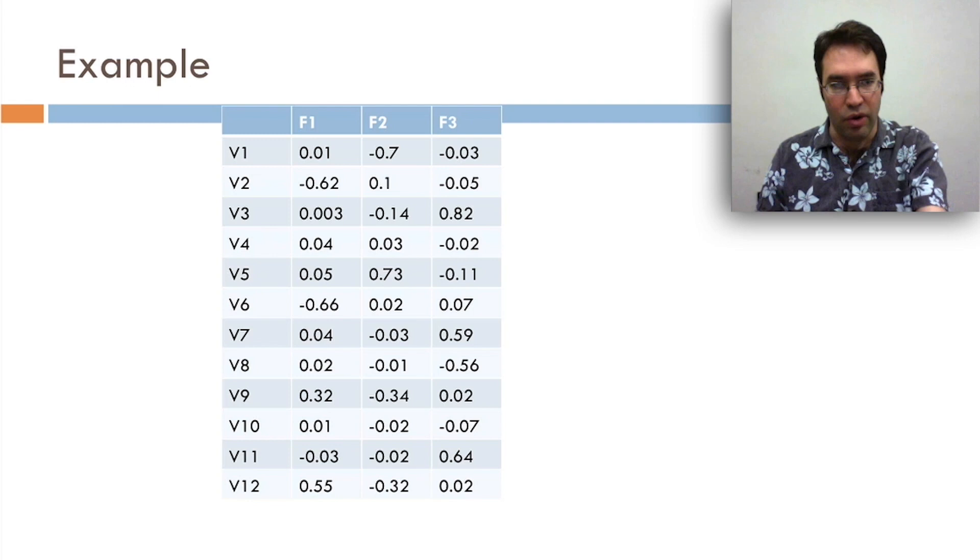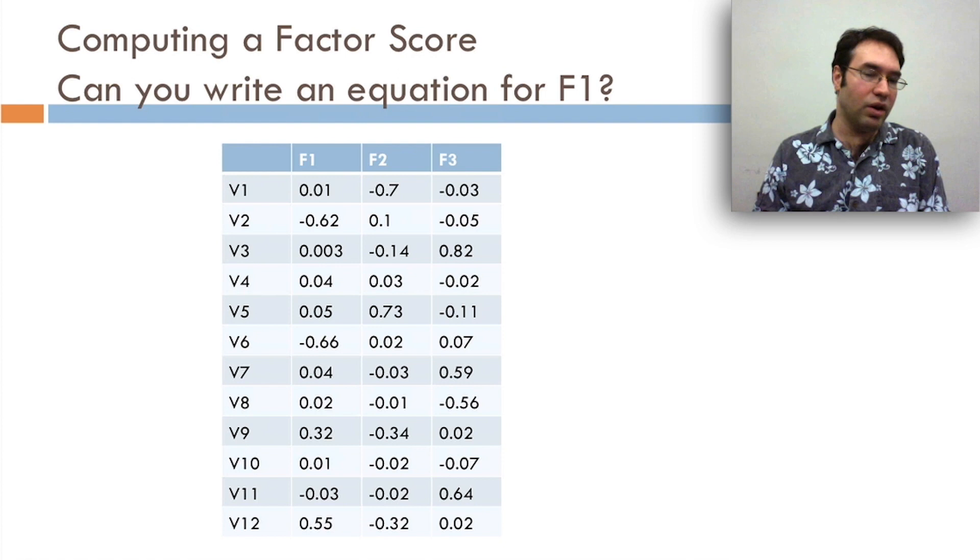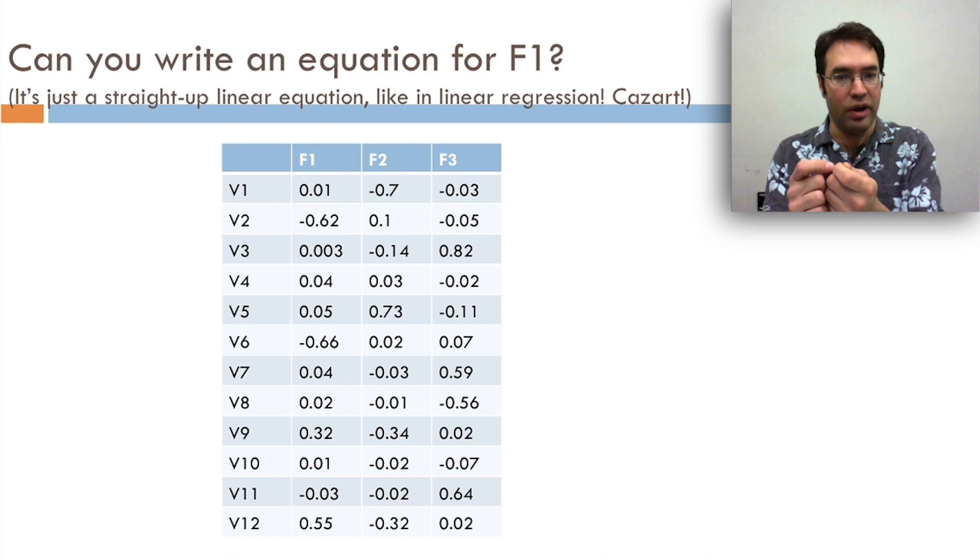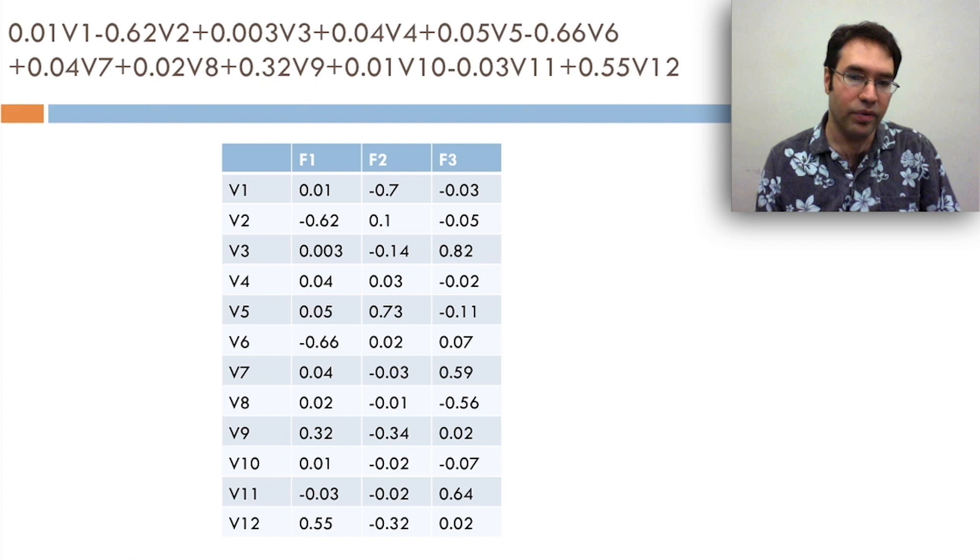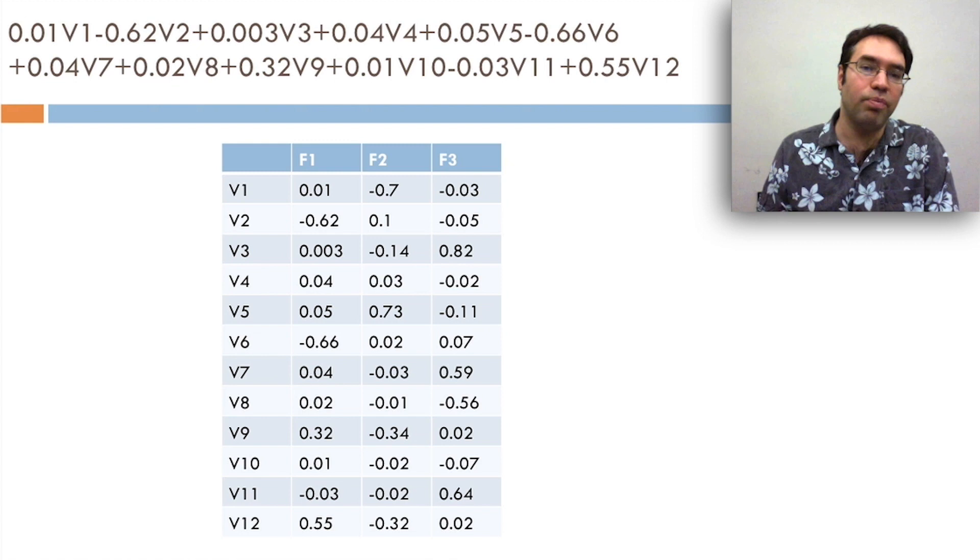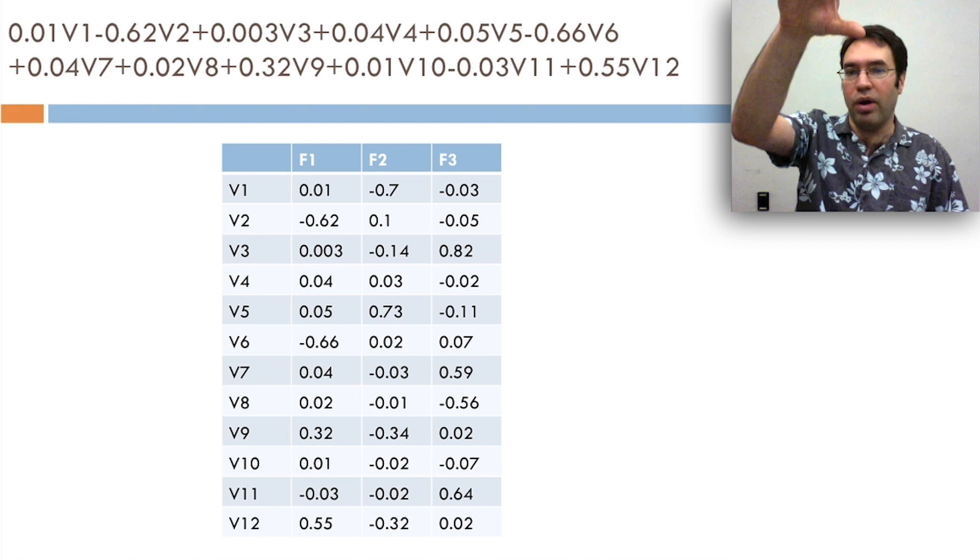So first question, can you write an equation for factor one? Turns out to be pretty easy. You just take a straight-up linear equation, like in linear regression. So, for example, what you'll get here for factor one is, look at the top left cell, 0.01 times V1, minus, go on down, 0.62 times V2, and go on down again, plus 0.003 times V3, and so on all the way through V12. You might want to pause here and take a look, and you'll see that every single thing in F1, whether the number is big or small, negative or positive, is going to end up being in this equation. So can you write an equation for F2?